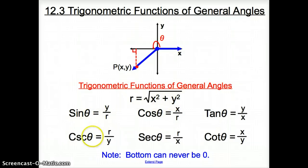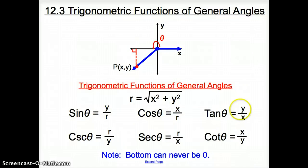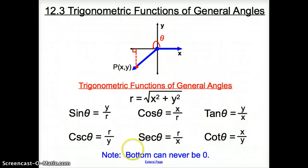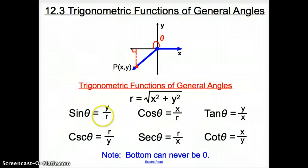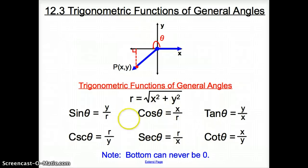Our trig functions are listed down here, where sine theta is Y over R, cosine is X over R, and tangent is Y over X. Notice they flip with their opposite angle. Also, the bottom of the fraction cannot be zero — because you cannot divide by zero. The world would explode. So here are the functions we will need, and this is how we find R.